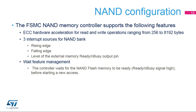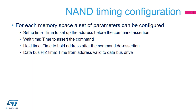Wait feature management: the controller waits for the NAND Flash memory to be ready before starting a new access. Each memory space — common and attribute — can be configured with different timings for command access, address write access, and data read/write access. The attribute memory space is used for the last address write access if the timing must differ from previous accesses in case of ready/busy management; otherwise only common space is needed. Four parameters define the number of HCLK cycles for the different phases of any NAND Flash access: setup time, wait time, hold time, and data bus high-Z time.